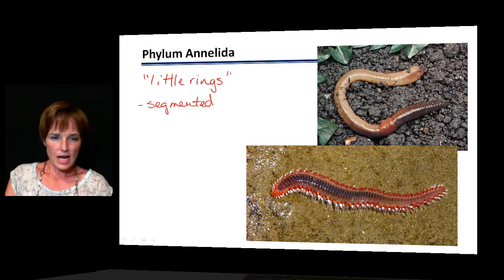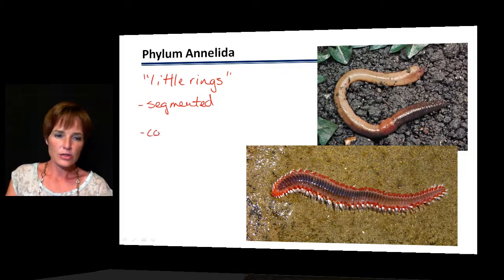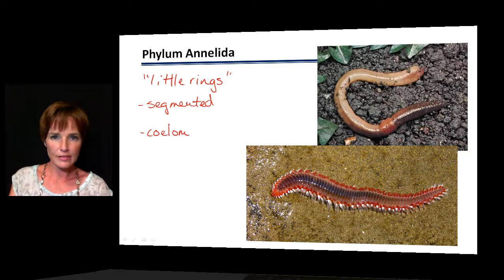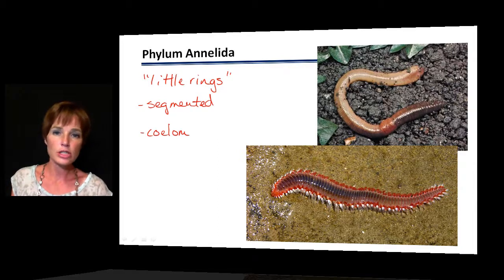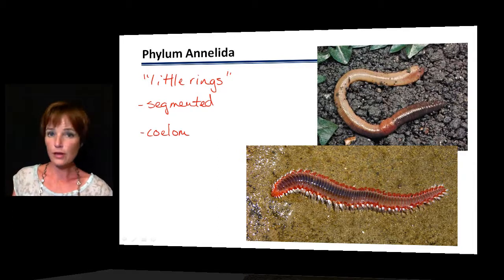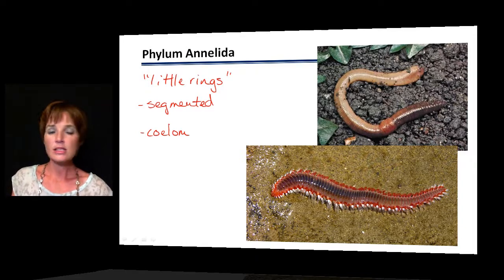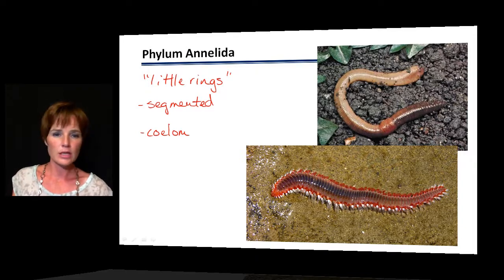In addition to segmentation, annelids have a true coelom — a true body cavity that is fluid-filled. It helps to cushion the interior from outer forces, protecting the organs, and is also used a lot for movement.